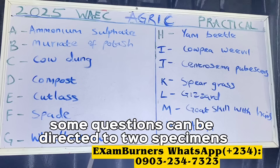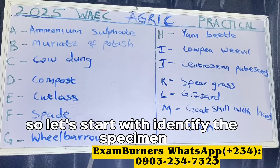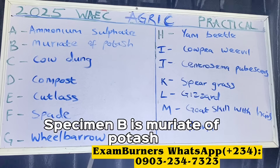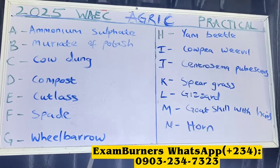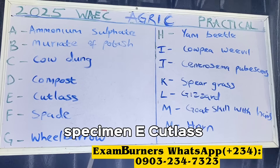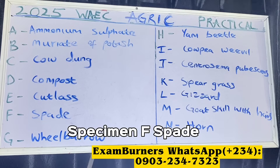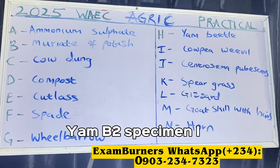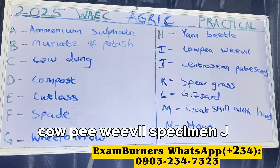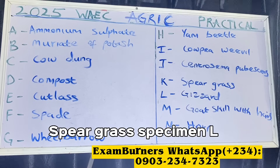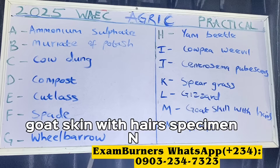Let's start with identifying the specimens. Specimen A is ammonium sulfate, Specimen B is muriate of potash, Specimen C is cow dung, Specimen D is compost, Specimen E is cutlass, Specimen F is spade, Specimen G is wheelbarrow, Specimen H is yam beetle, Specimen I is cowpea weevil, Specimen J is Centrosema pubescens, Specimen K is spear grass, Specimen L is gizzard, and Specimen M is goat skin with hair.